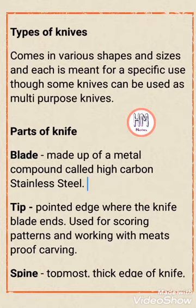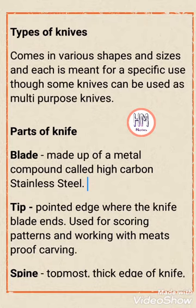One by one we will discuss the different parts of a knife. The first one is the blade. The blade is usually made up of a metal compound which is called high carbon stainless steel. The steel combines the property of carbon — of being easily sharpened — and the non-corrosive properties of stainless steel.